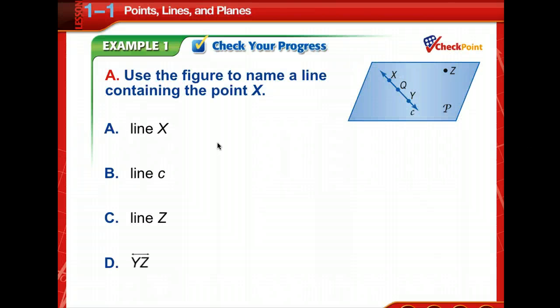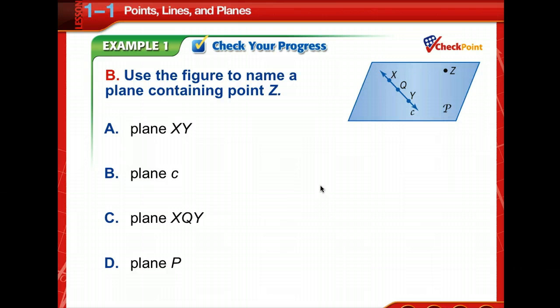Time to check your progress. So use the figure to name a line containing the point X. So pause for a moment and then go back and study this. Good job. The choices that they give us, line C is the only choice. Z is not a line. X, it takes more than two points to name that line. And then Y, Z, that's not the line. So you see why those others don't work.